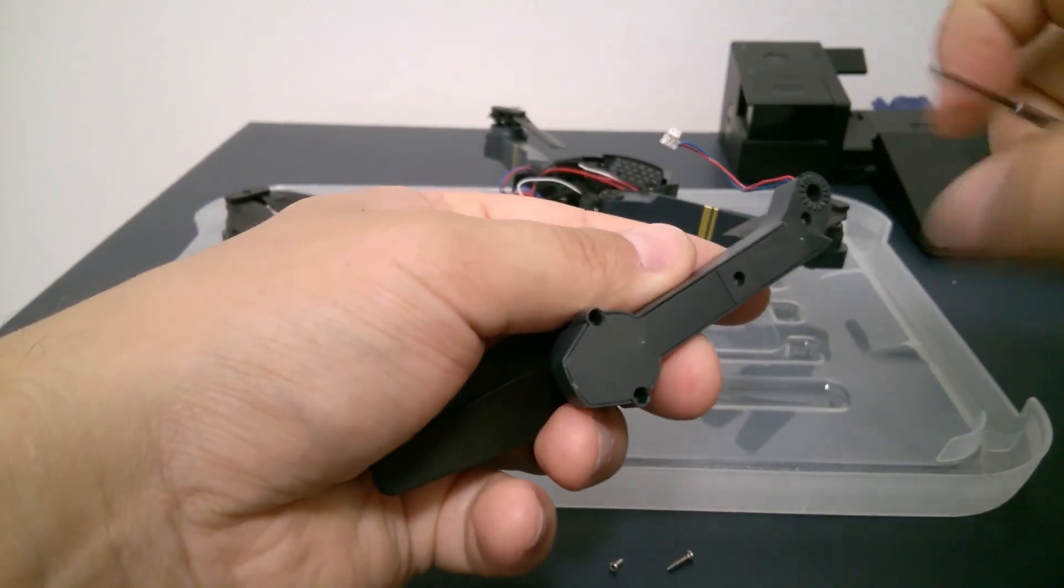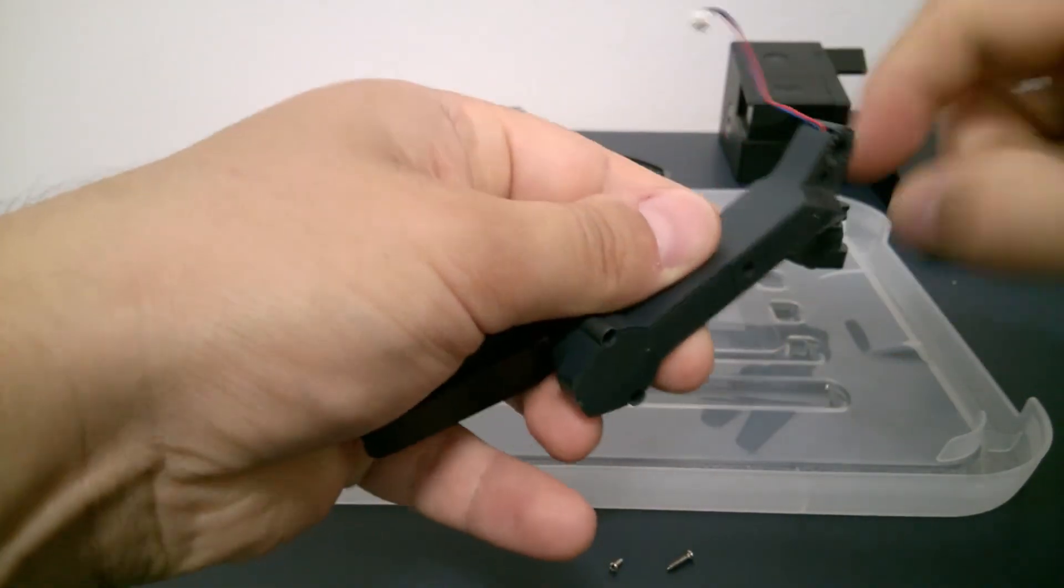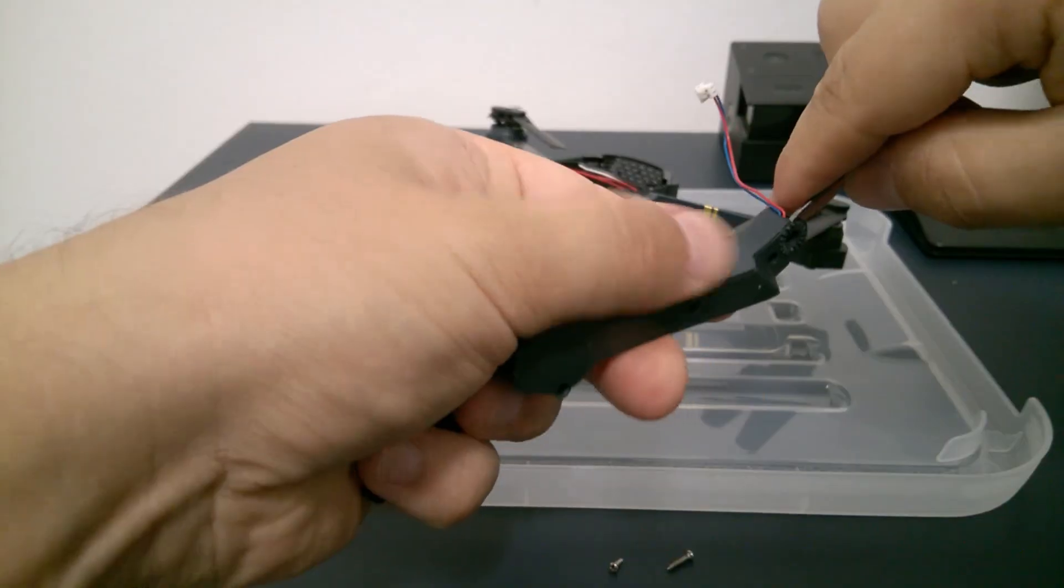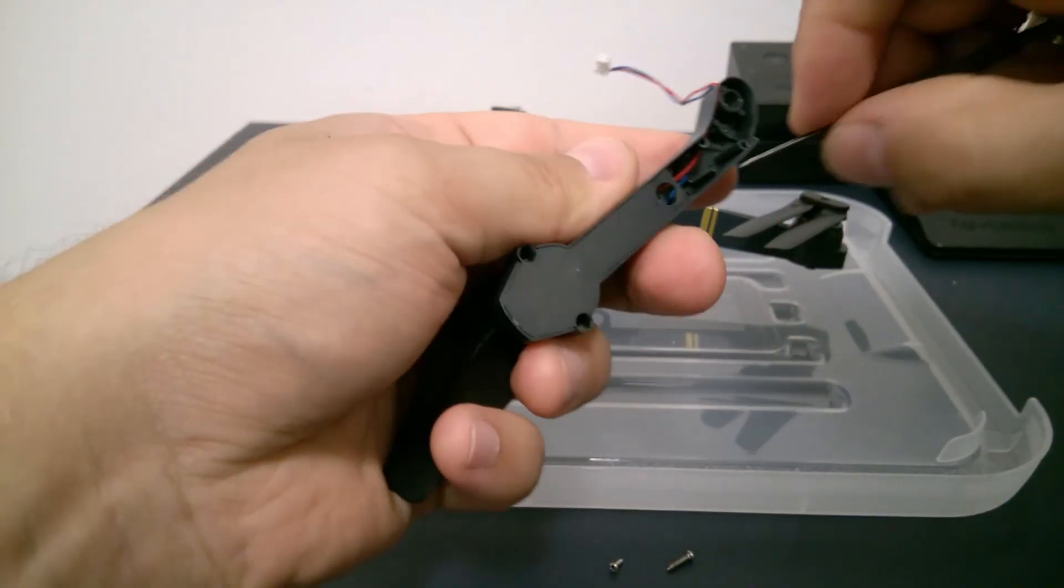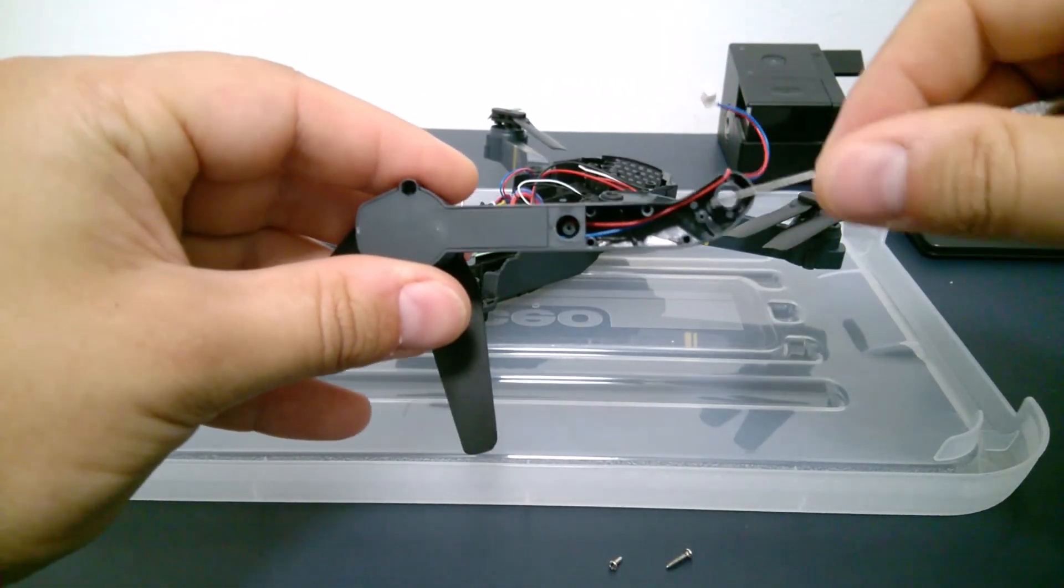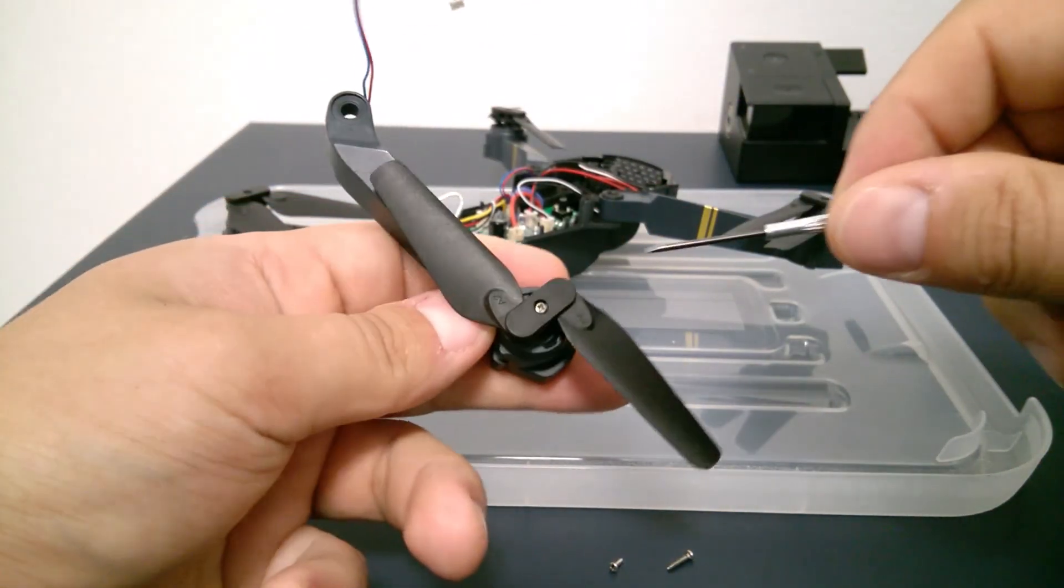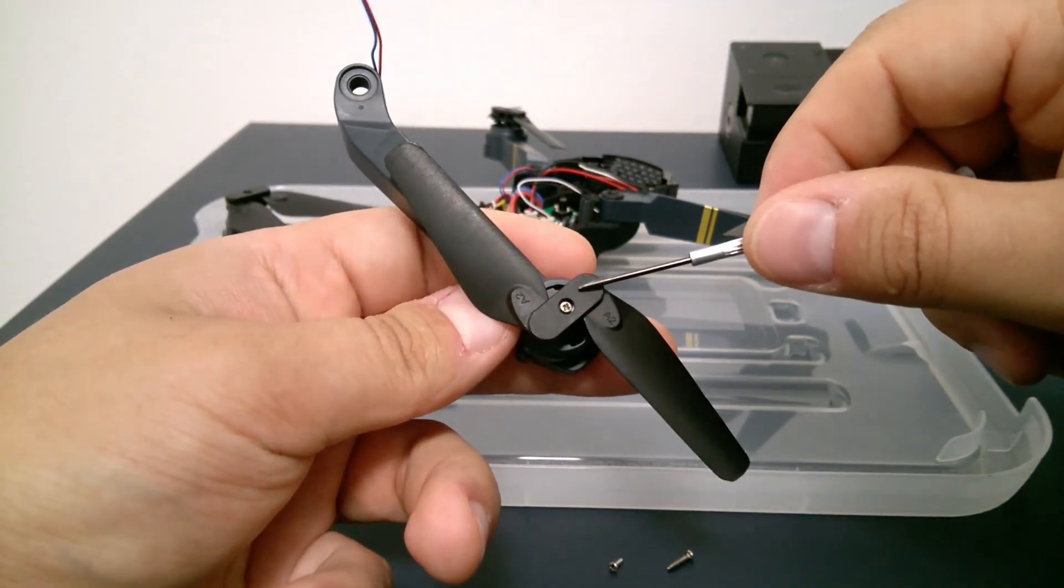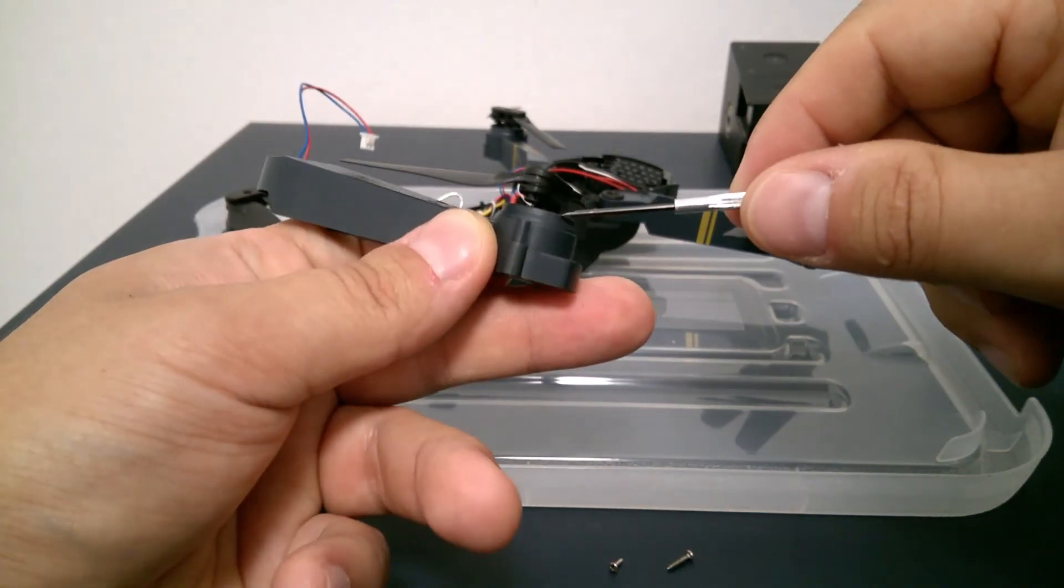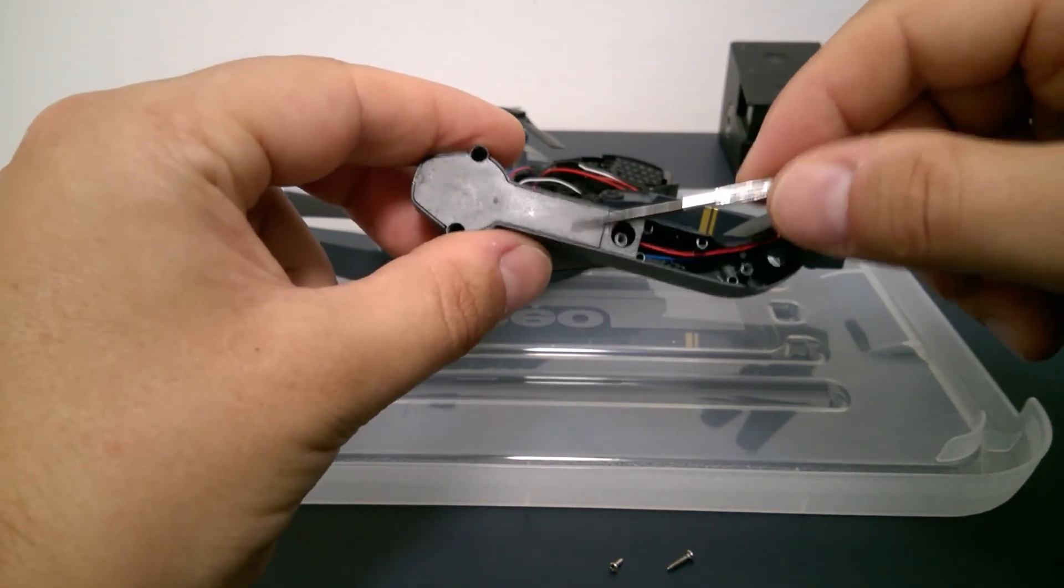Now next thing to do is to remove the caps. You remove the first cap and then you need to unscrew the screw that keeps the propeller to its axis in order to be able to remove this cap.